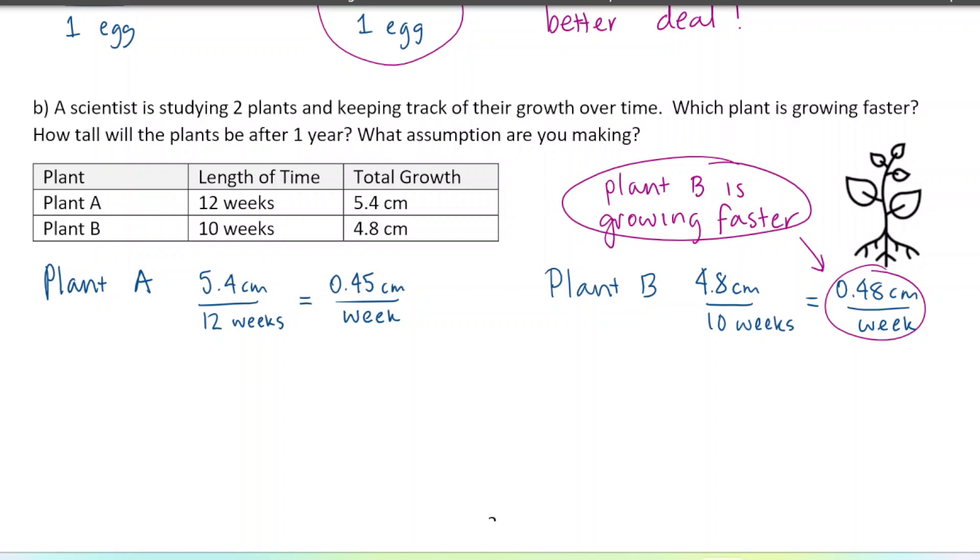How tall will the plants be after one year? Okay, so we know plant A is growing 0.45 centimeters per week and there are 52 weeks in a year. So we're just gonna multiply it by 52, and we get 23.4. And for plant B we're gonna do the same thing. We're gonna multiply it by 52 because there's 52 weeks in a year, and it's growing 0.48 centimeters every one of those weeks. And so we get 24.96 centimeters.